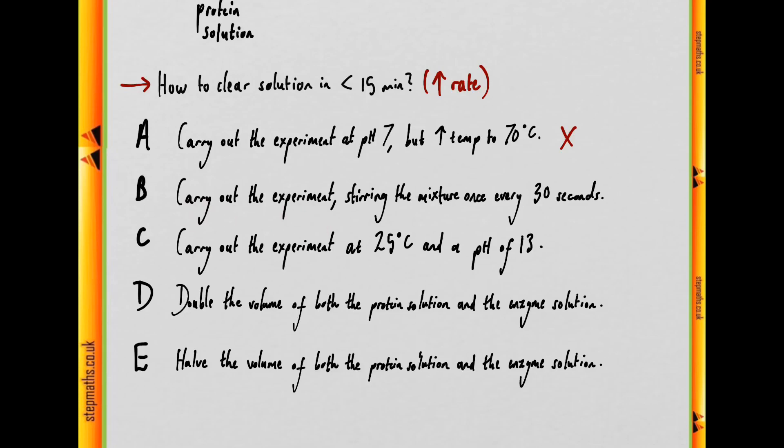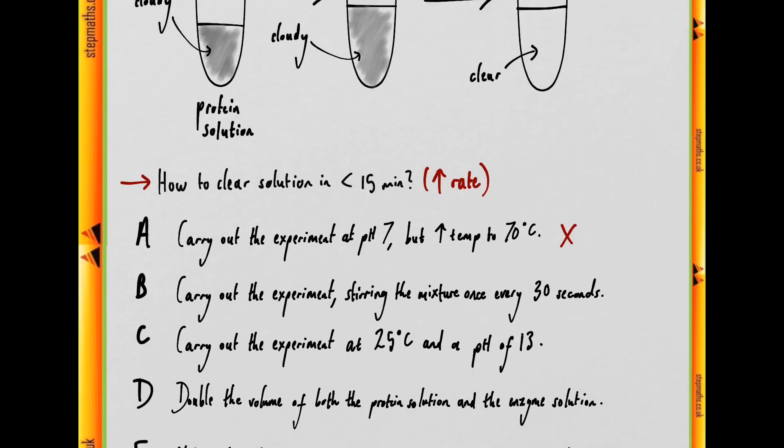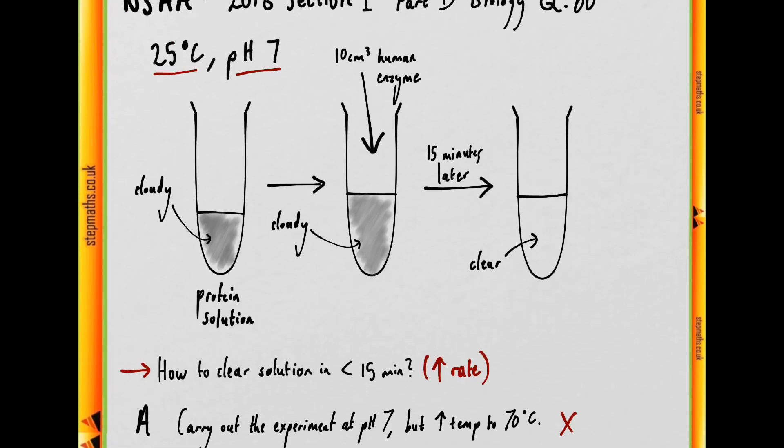Option B, carry out the experiment stirring the mixture once every 30 seconds. Well, we know this would always work since by stirring you increase the rate of reaction by constantly shifting the differential between the enzyme concentration and the substrate concentration, which tends to equilibrate if you were to just leave the solution as it is.